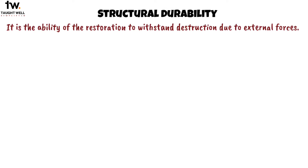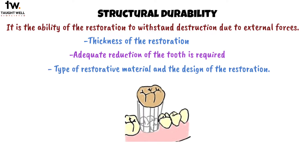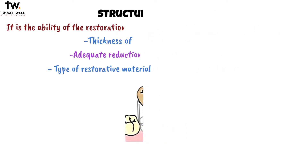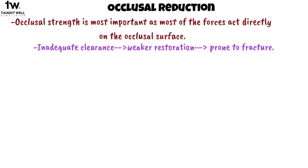Next is structural durability. It is the ability of the restoration to withstand destruction due to external forces. This durability comes with the thickness of the restoration. To obtain adequate thickness of restoration, adequate reduction of tooth is required. The amount of reduction depends on the type of restorative material and the design of the restoration. The first feature of structural durability is occlusal reduction. Occlusal strength is most important as most of the forces act directly on the occlusal surface. Inadequate clearance may lead to a weaker restoration that is prone to fracture.